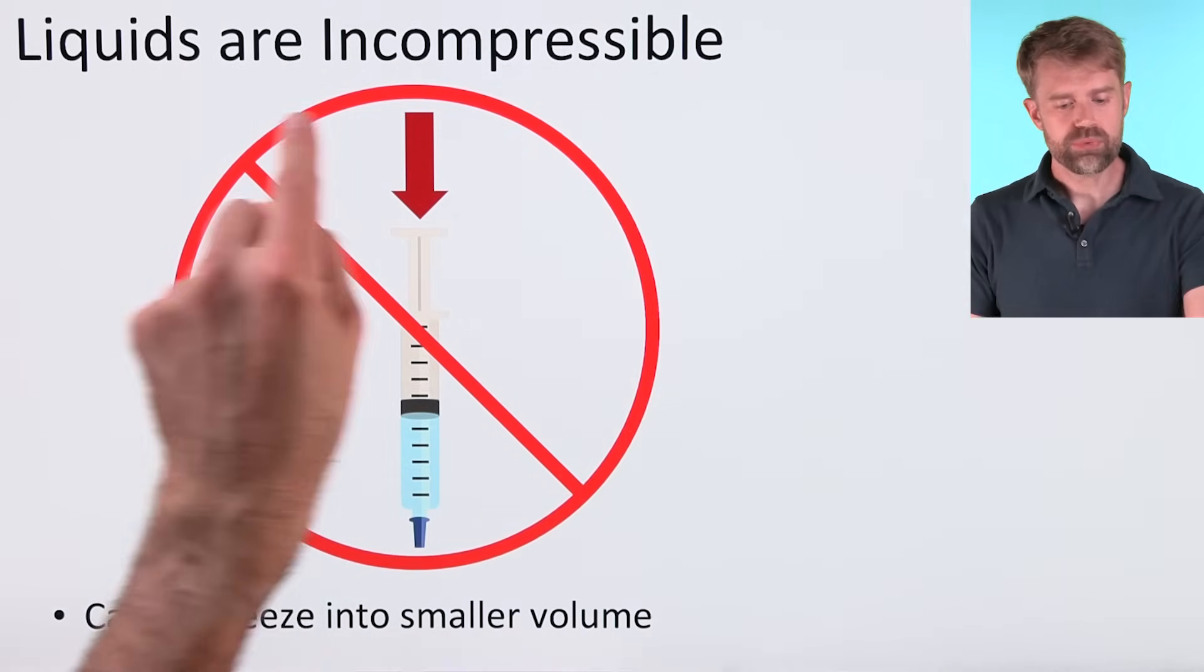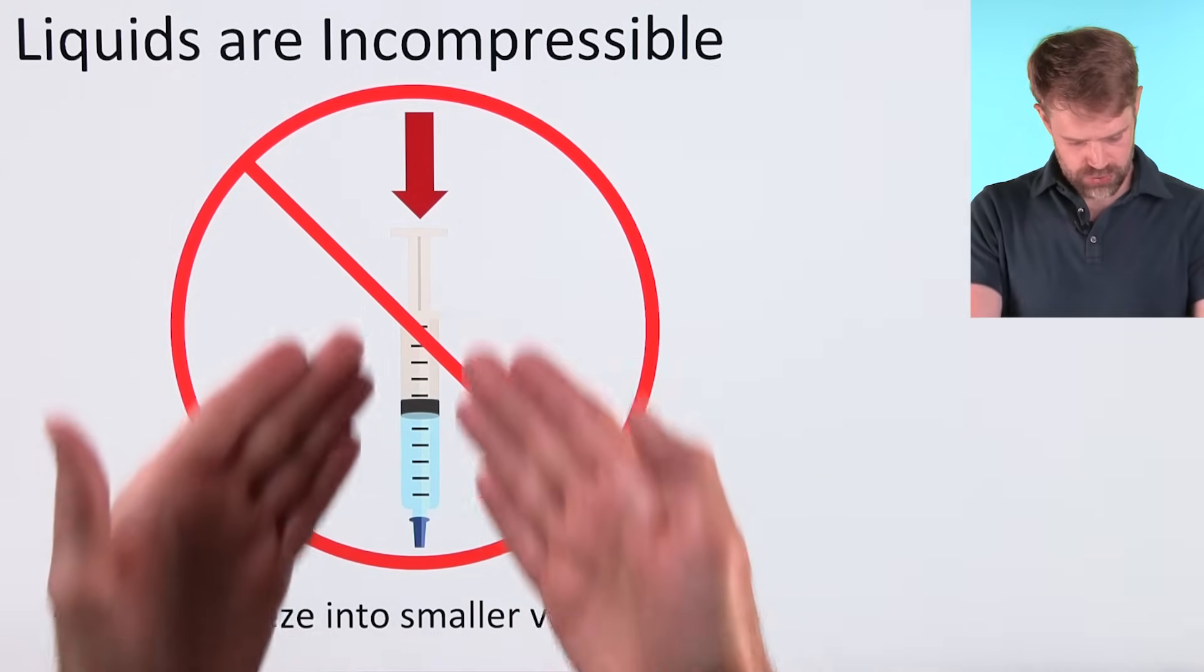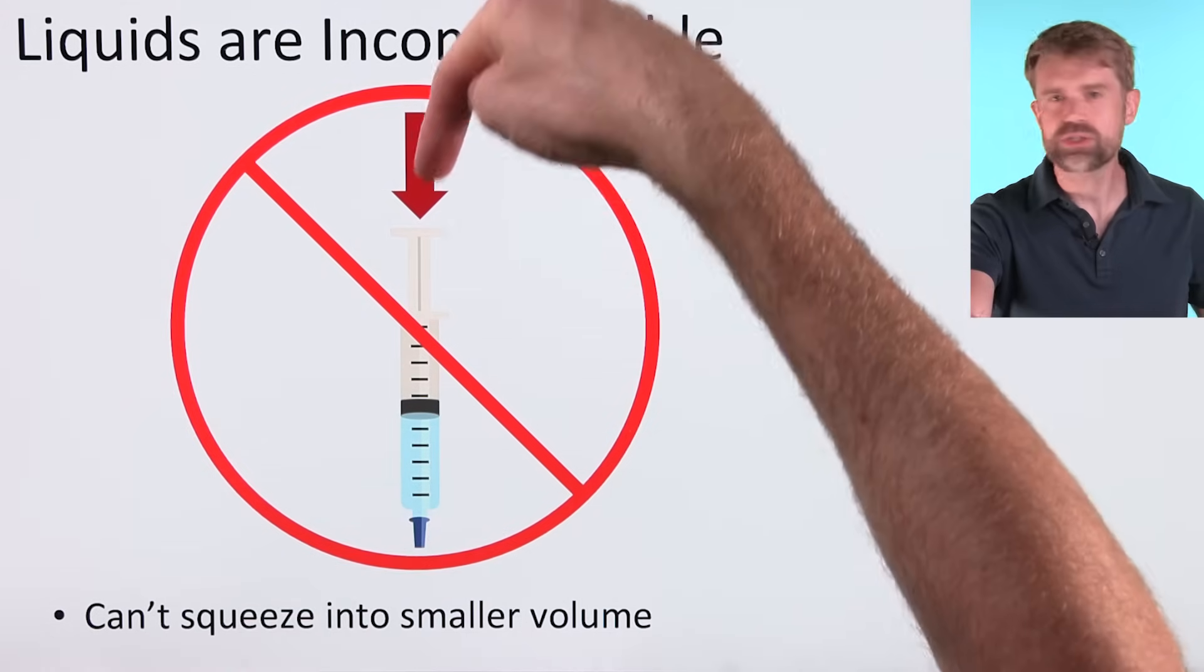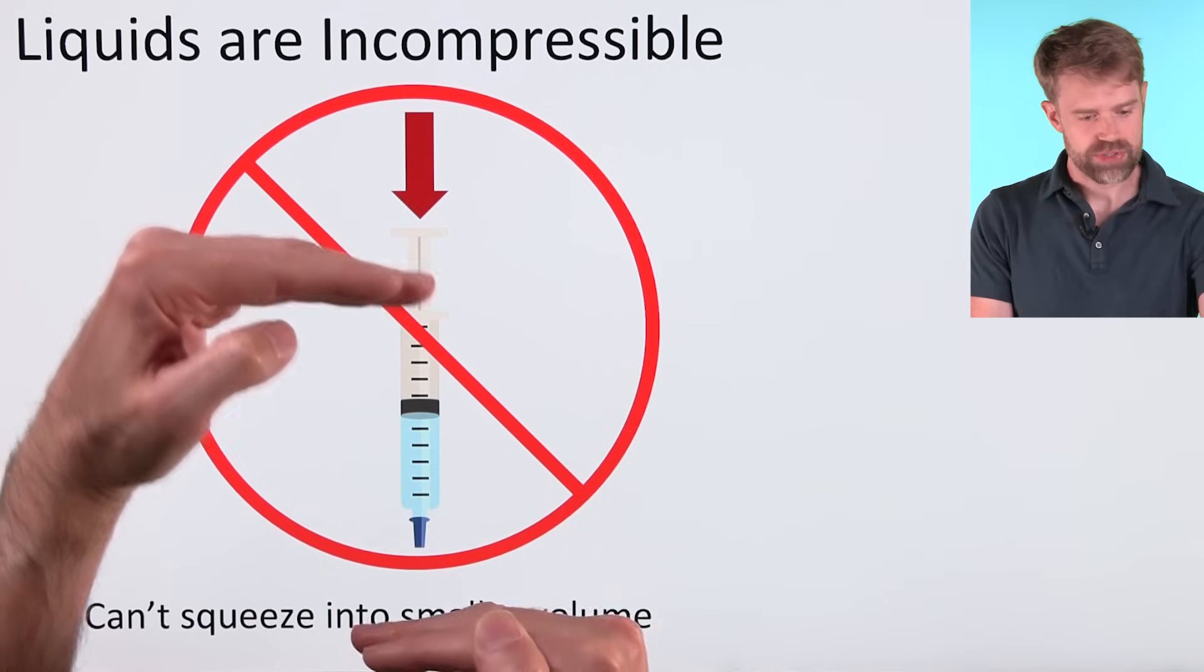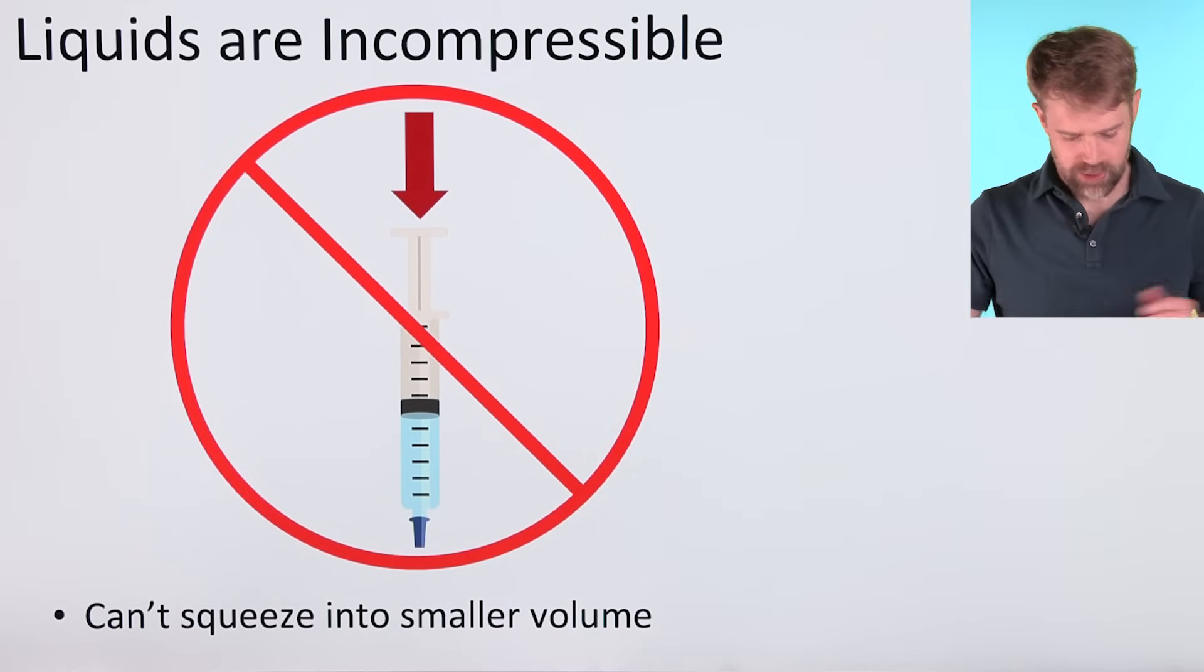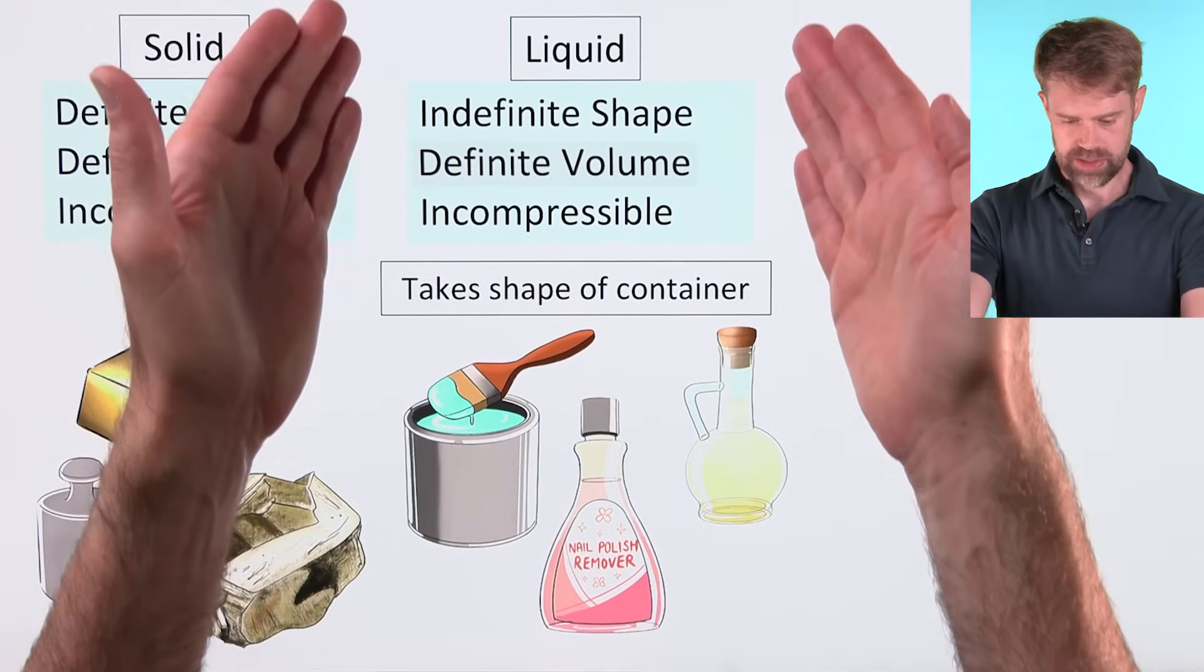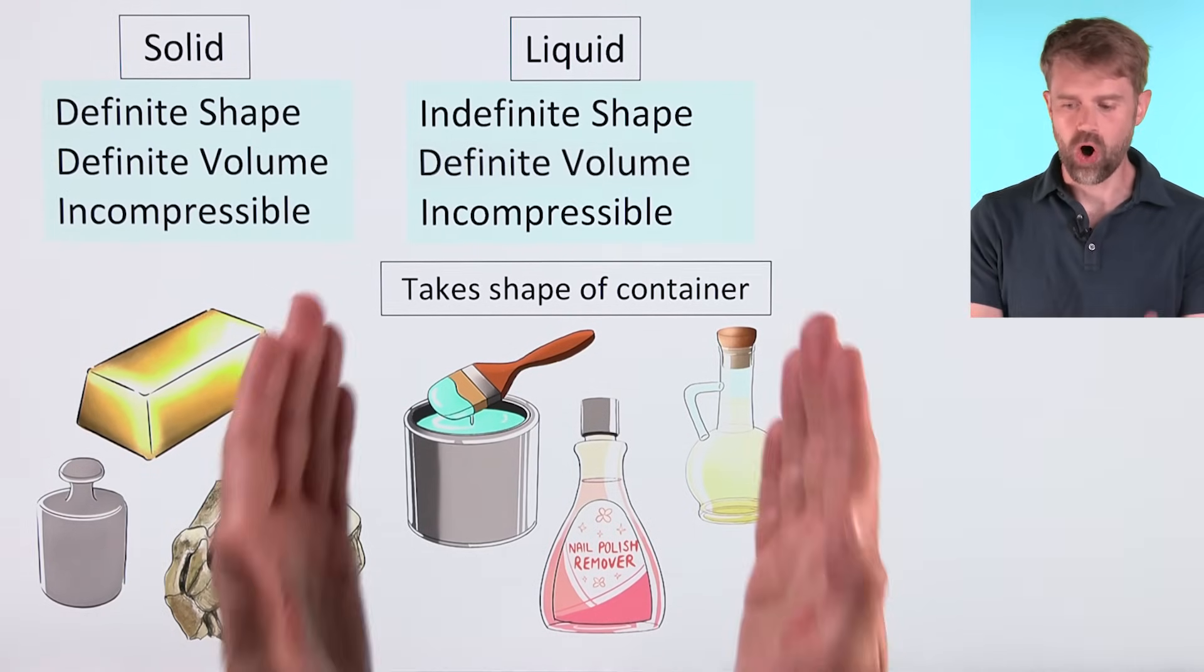Liquids are incompressible. This sometimes surprises people, but it's true. If you put a liquid in a syringe like this and you seal the end, you cannot squeeze this plunger down. The liquid just won't compress. So you can't squeeze a liquid into a smaller volume. Obviously these big picture characteristics that we talked about are true for all liquids.